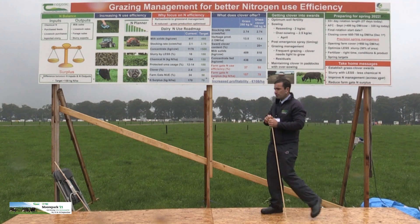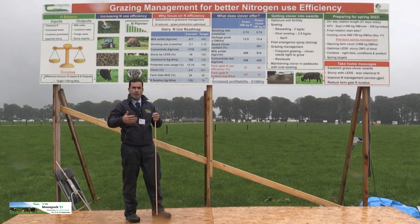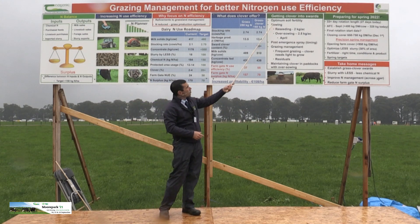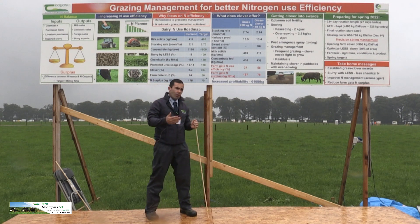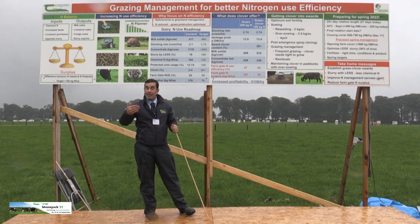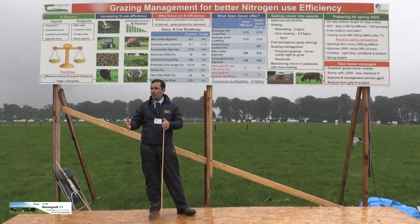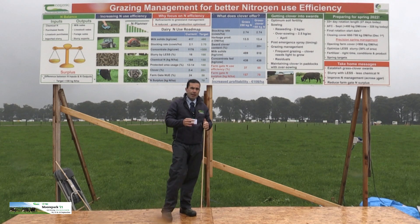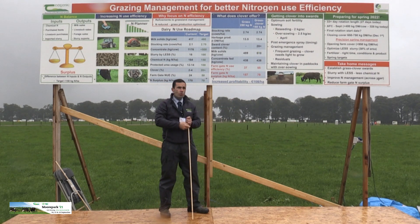The biggest challenge we see on farms is actually getting clover into the system and getting the benefit from it. We know we can get the benefit, but incorporating enough of it in the sward is the key challenge. Michael touched on soil fertility — if we don't have optimum soil fertility, a minimum soil pH of 6.3 to 6.5, and index 3, ideally index 4, for phosphorus and potassium, it's very difficult to establish clover and maintain it in the sward going forward.